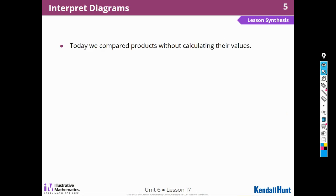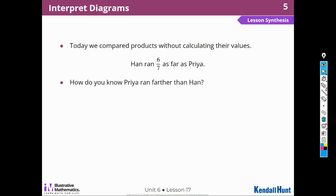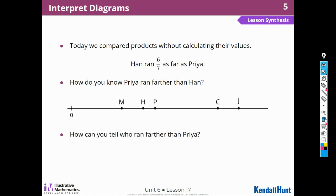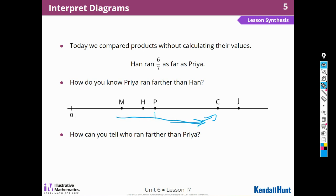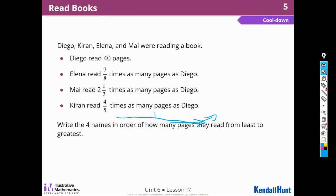Today we compared products without calculating their values. Han ran 6 sevenths as far as Priya. How do you know that Priya ran further? Because 6 sevenths is less than 1, so less than 1 times Priya's distance is less than Priya's distance. How can you tell who ran farther than Priya? On the number line, anything to the right of Priya's point is farther — so Claire and Jada ran farther than Priya.